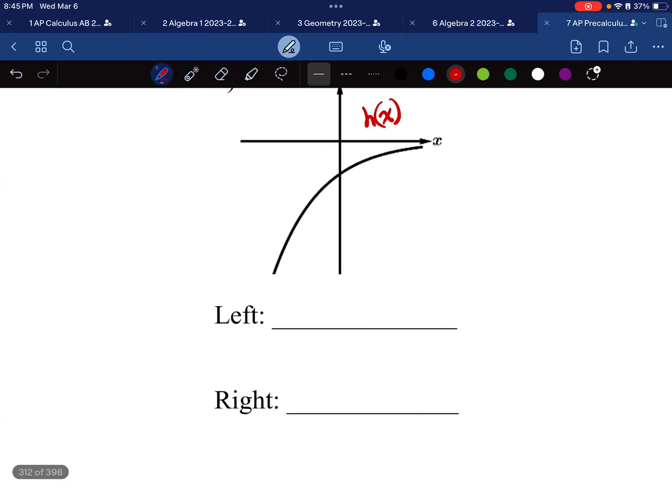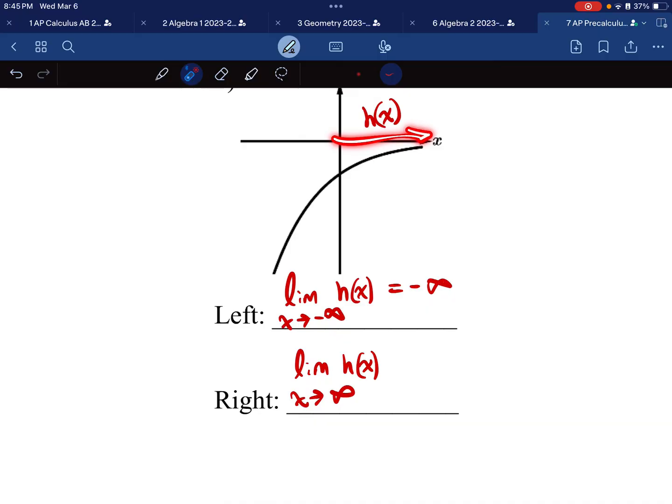What about over here for the graph of h of x? So let's do the limit of h of x as I go left. This is going to be as x approaches negative infinity. As I go left, you can see that I'm going farther and farther away from the x-axis towards negative infinity. And the limit of h of x as x approaches positive infinity, as I go to the right, I'm getting closer and closer to this x-axis, therefore that height is 0.